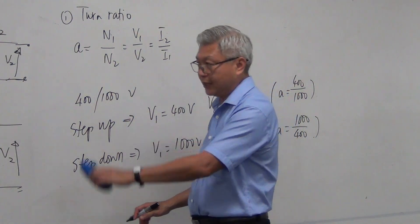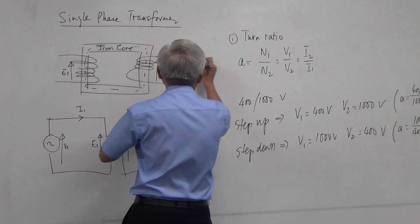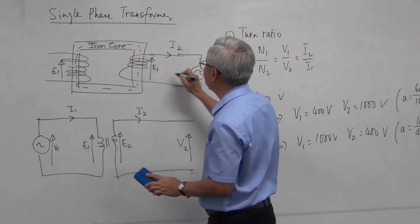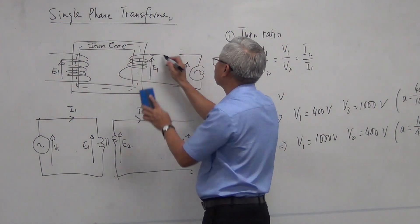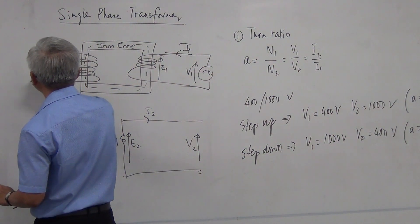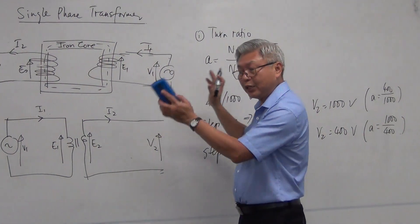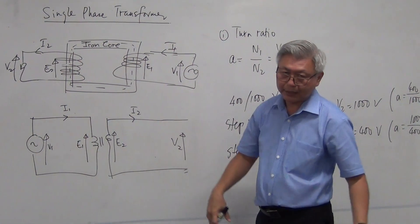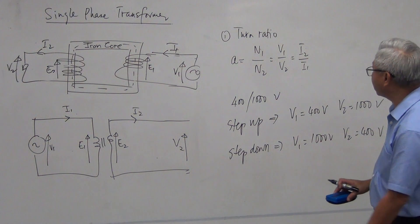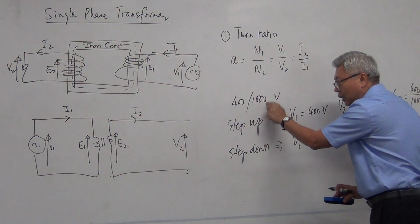Transformers can be used both ways. My power supply could be connected to either side — whichever side you connect becomes the primary and the other becomes the secondary. Transformer is equipment you can use to step up or step down voltage depending on how you connect your power supply. If you connect it to the low-voltage side, your intention is to step up; if you connect it to the high-voltage side, your intention is to step down.